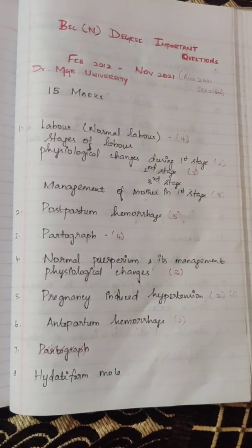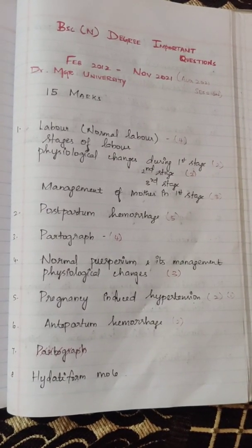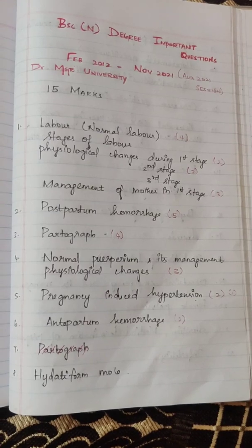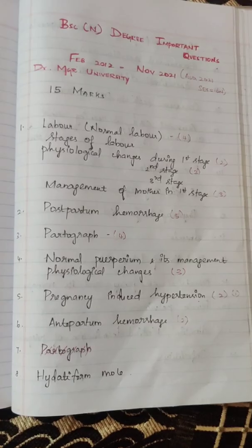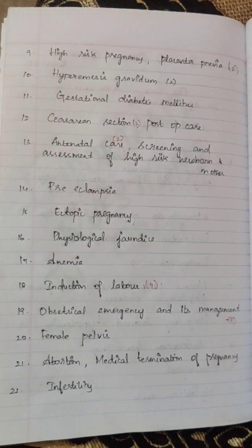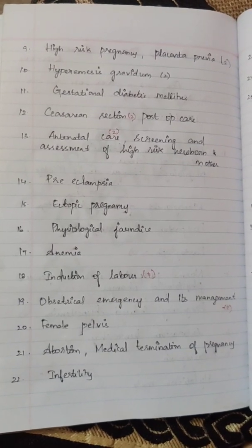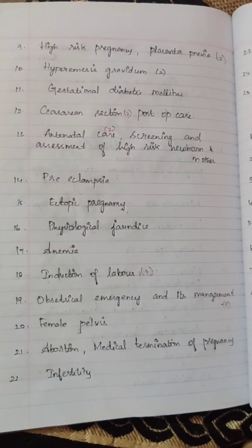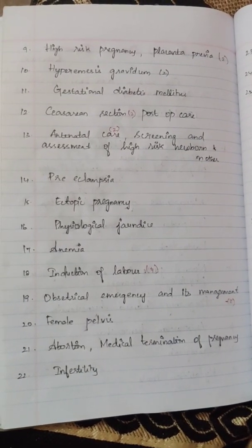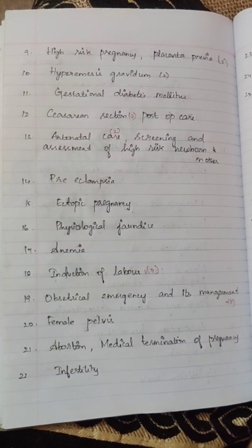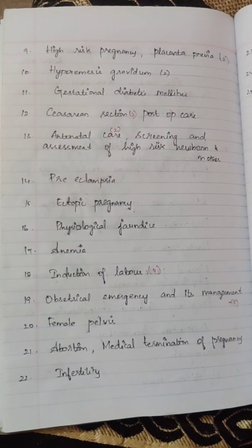Pregnancy-induced hypertension has appeared 2 times for 15 marks and 2 times for 5 marks. Antepartum hemorrhage, 2 times. Hydatidiform mole, 1 time. High-risk pregnancy — list down high-risk pregnancies and their subdivisions. Placenta previa, 5 marks. Hyperemesis gravidarum — 15 marks, 1 time, and 5 marks, 1 time.